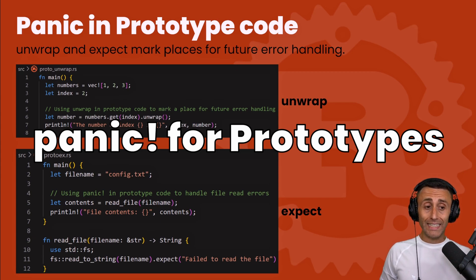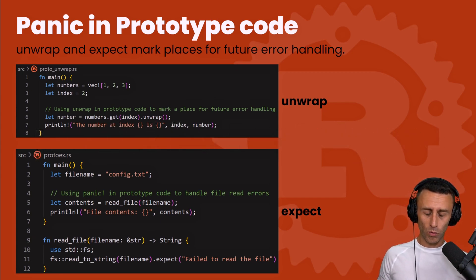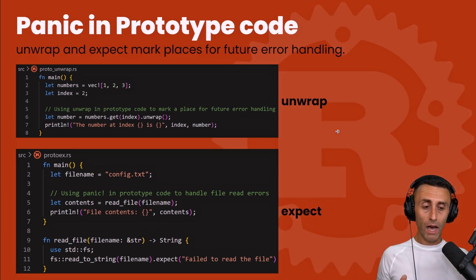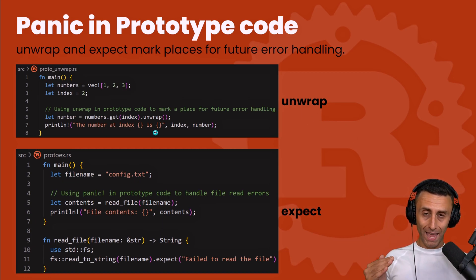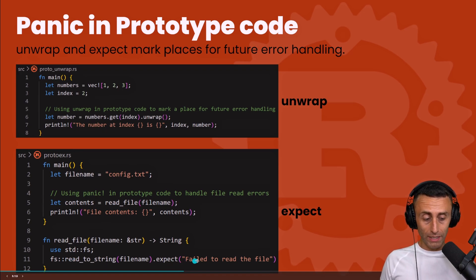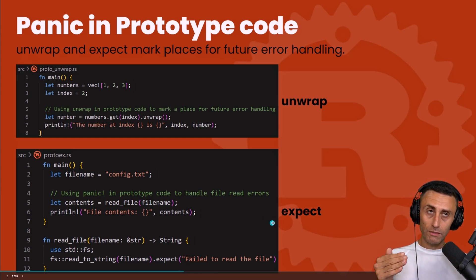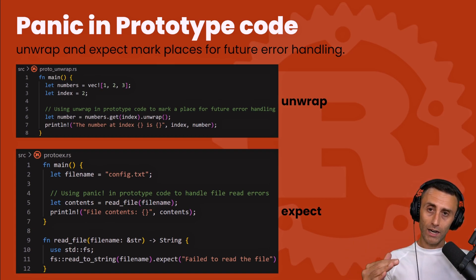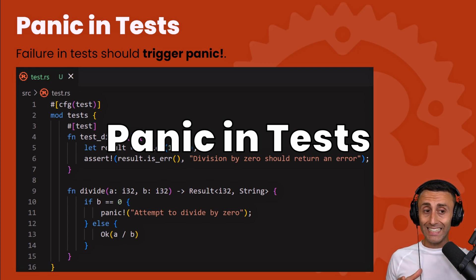Another use case is when we have prototype code — we are just getting started writing our Rust program. In this case we can use unwrap and expect. A quick recap: unwrap basically calls the panic function, and expect also calls the panic macro but with a custom string message, as you can see on line 11. Expect gives a bit of error context but the program still panics. This acts as a placeholder until we handle the error more properly.